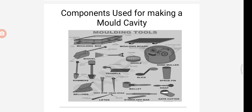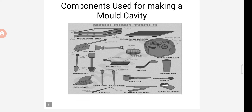Next we can see the shovel. It is one of the tools used for mixing and tempering molding sand. It is used for carrying the molding sand from the sand pit or pile to the molding box. Next we can see the riddle. It is a metal screen used for removing foreign material such as stones, nails, etc., from the molding sand. It has a circular or square wooden frame with a wire mesh at the bottom.